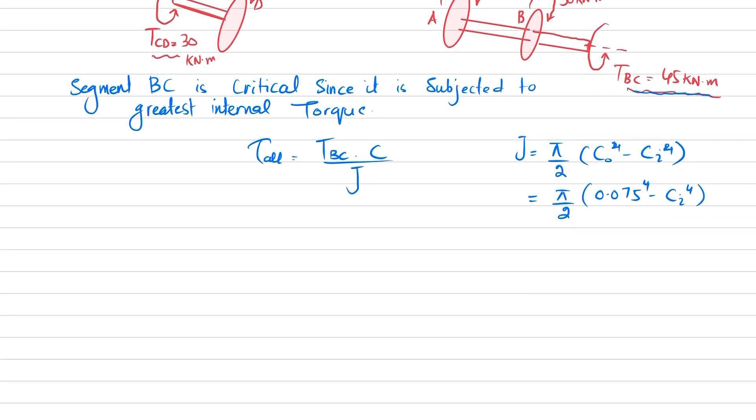You can just put the values. We have allowable shear stress that is given as 85 megapascal, so 85 times 10 to the power 6 equals TBC is 45 times 10 to the power 3. This c is the outer or maximum, so it will be c_outer, 0.075 meter divided by pi by 2 times (0.075 to the power 4 minus ci to the power 4).